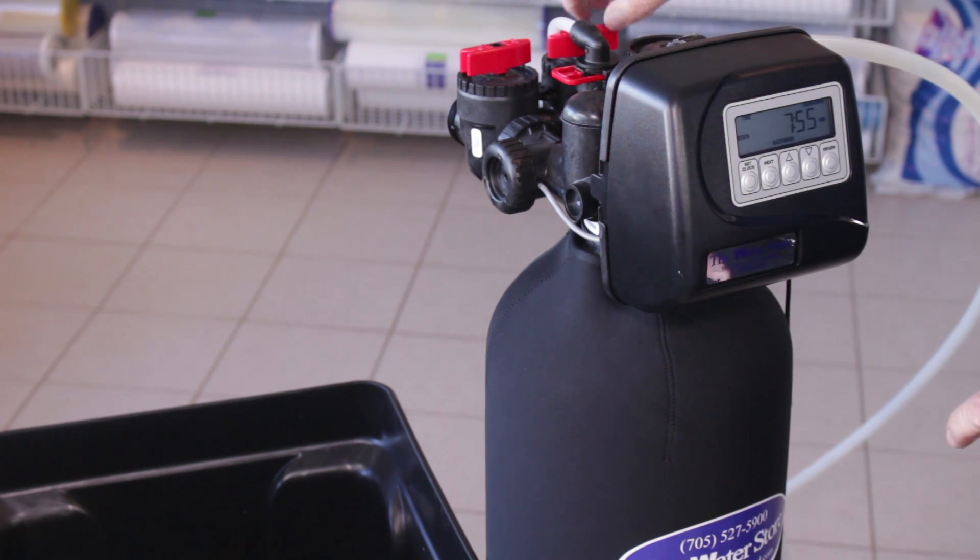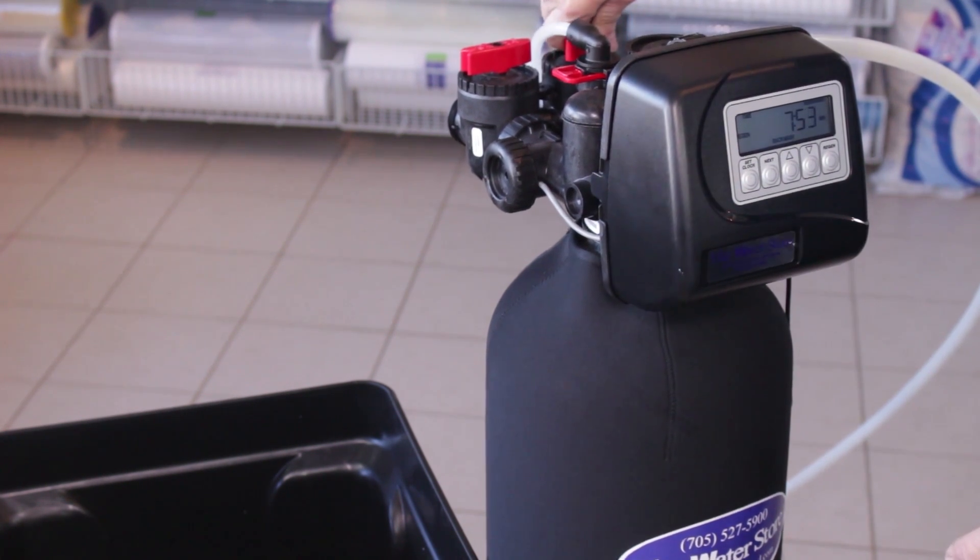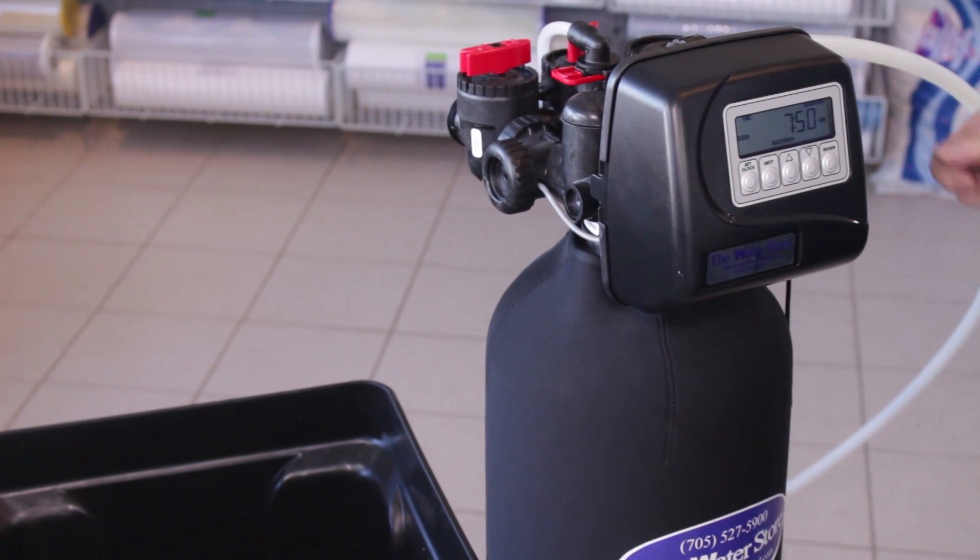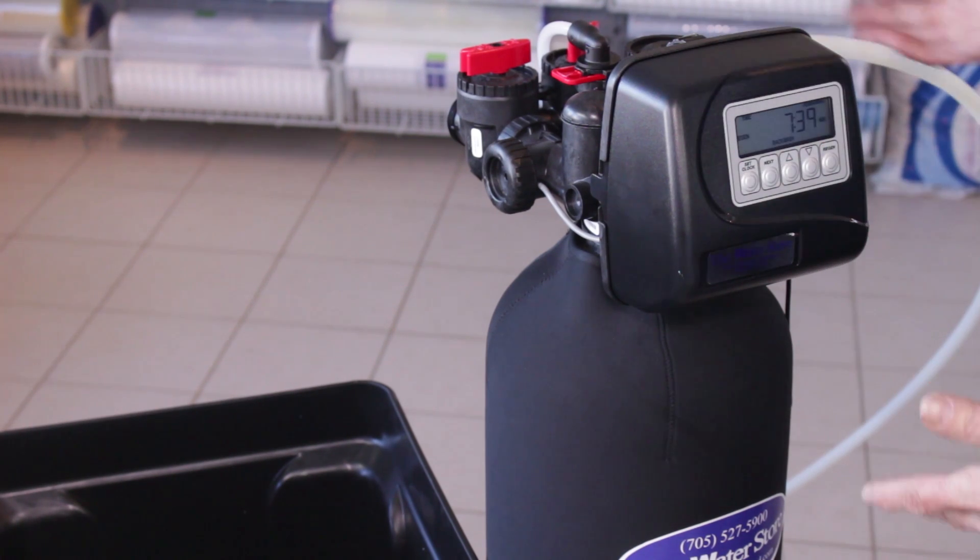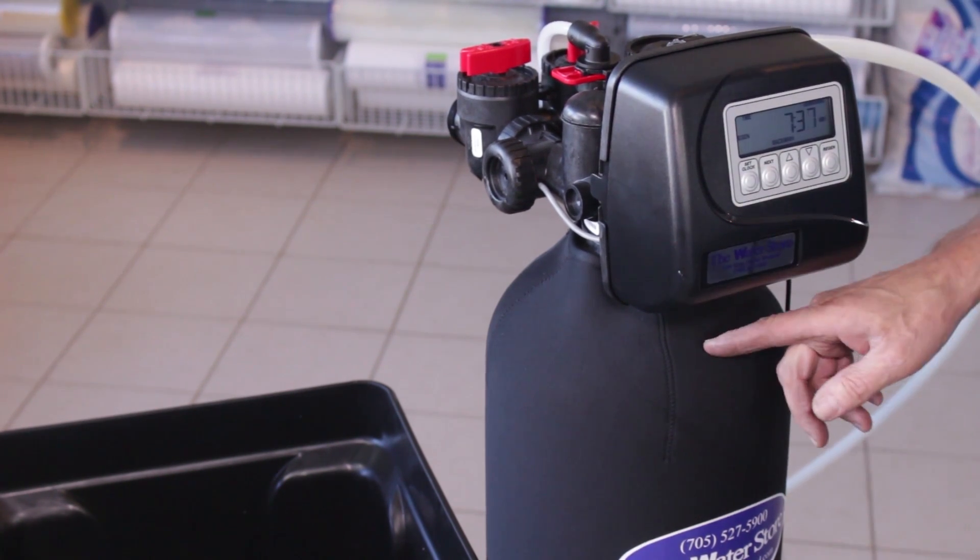So what we would do now is we'd open up the inlet valve until water starts to flow through and you'll see water now running to the drain. So what that's doing, well mostly air at first but then eventually you'll see water. What that's doing at this stage is it's flushing out all the air out of the media tank.